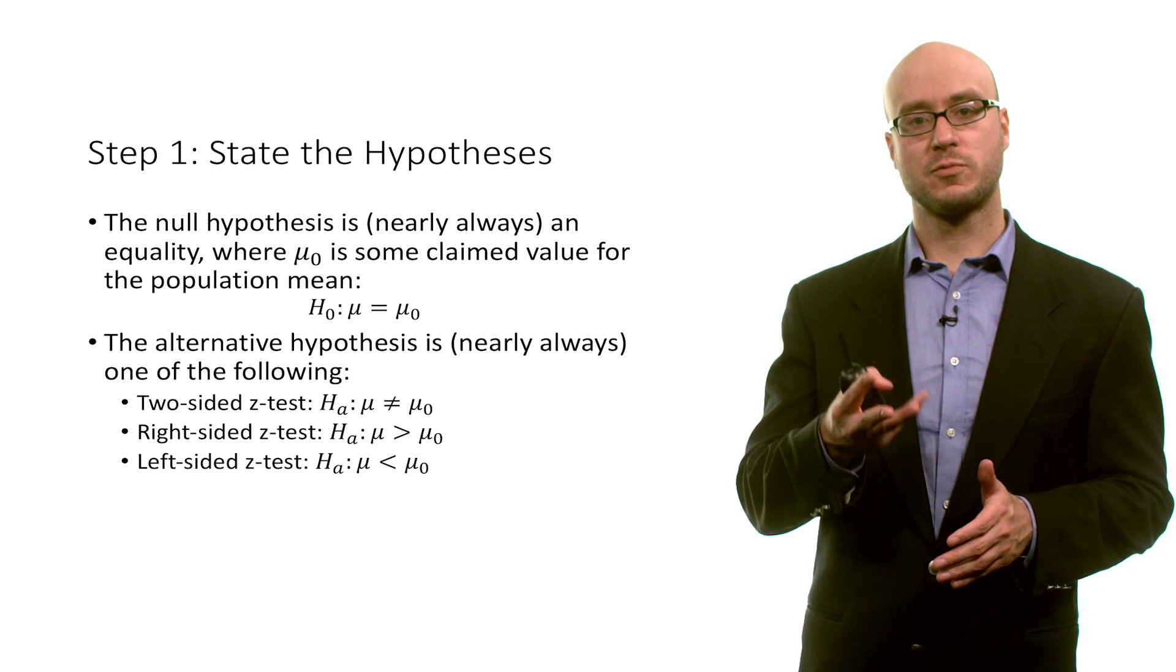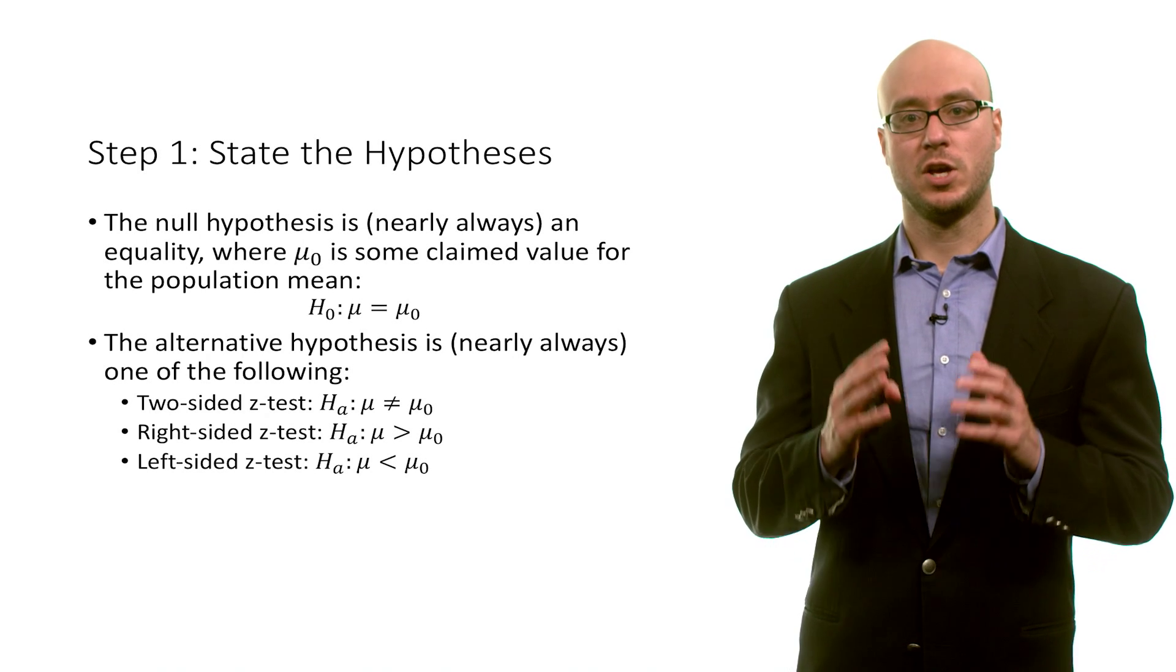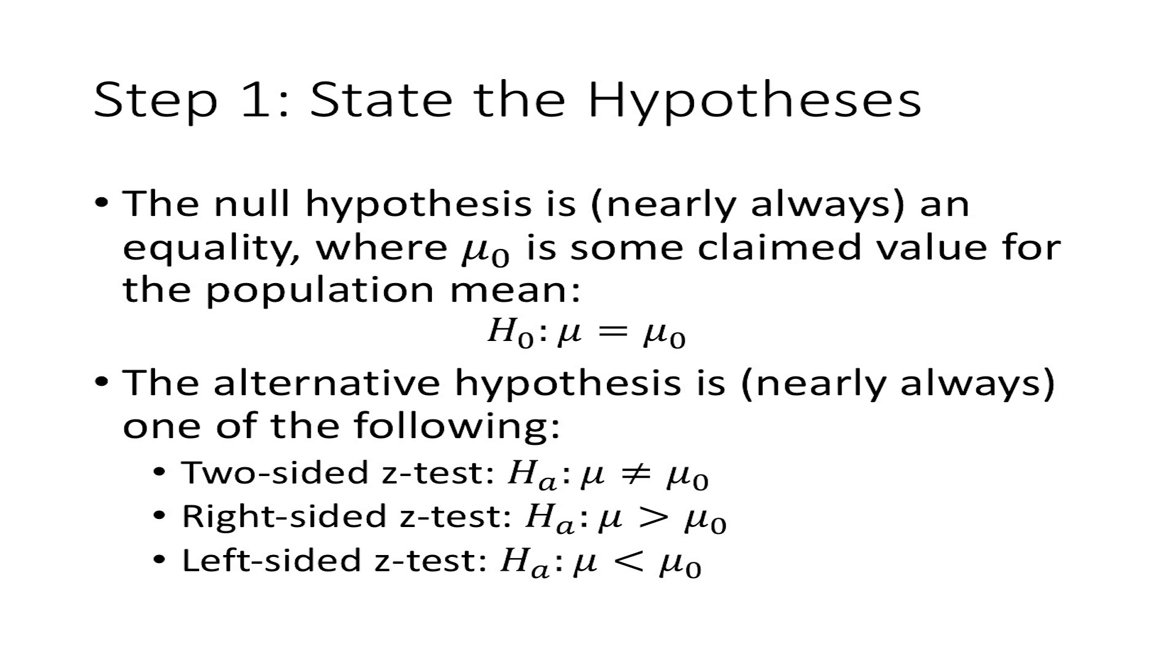The alternative has three different variations. You can either have what we call a two-sided Z test, where the alternative is simply that the population mean is not equal to mu naught or mu subscript 0. Or we might have a right-sided Z test, in which the alternative is that the population mean is greater than the claimed value. Or a left-sided Z test, where the alternative is that the population mean is less than some claimed value. Most commonly, you will see a two-sided Z test. But in some context, a right-sided or left-sided Z test is also used.